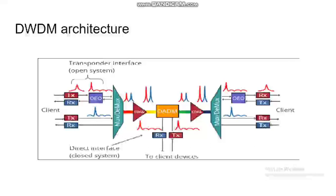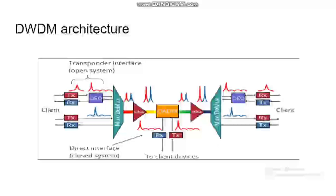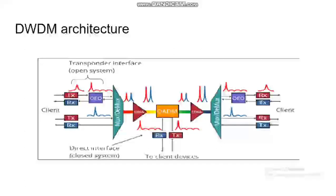We use an EDFA amplifier for boosting the signals before sending them to demultiplexers. Then demultiplexers separate the different wavelength signals and send them to receivers. The same is applicable for WDM systems, but here we additionally use EDFA and OADM, which is extra compared to WDM systems.